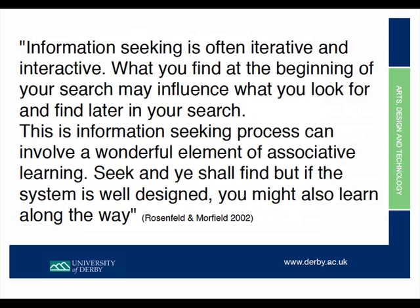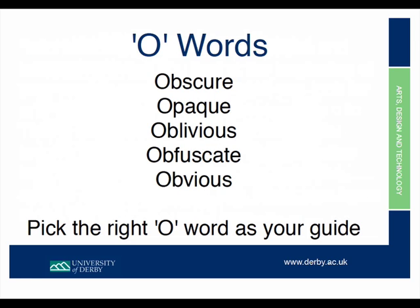The key thing is to make sure that when people go to your site — whether they're looking at your showreel, web designs, or photographs — they find what they're after. Be careful about 'O words': your website should not be obscure, opaque, or obfuscating — muddying the waters. What you want is the last O word: obvious. Things on your site need to be obvious to the end user — clear that when someone visits, they know what to do and where your links are, and if they want to get in touch, it's obvious how.